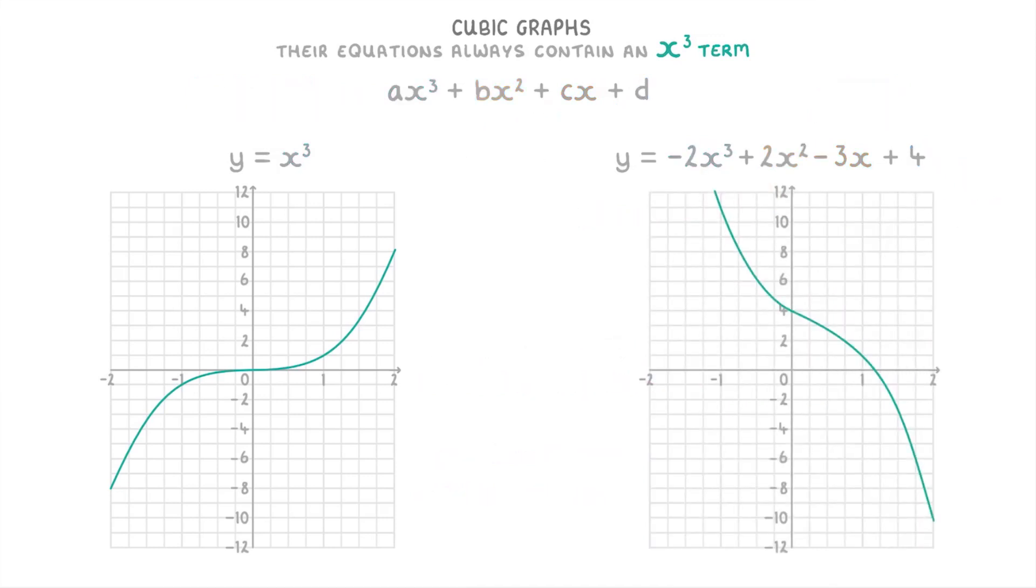Now you don't need to be able to figure out exactly what a cubic graph will look like just by looking at the equations. But you do need to know whether it will go from the bottom left to the top right, or from the top left to the bottom right.